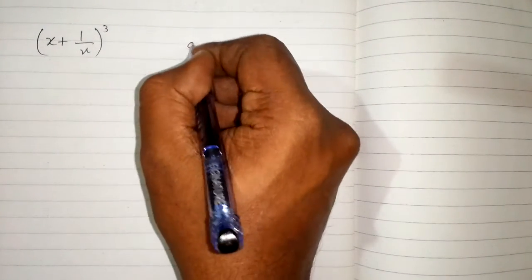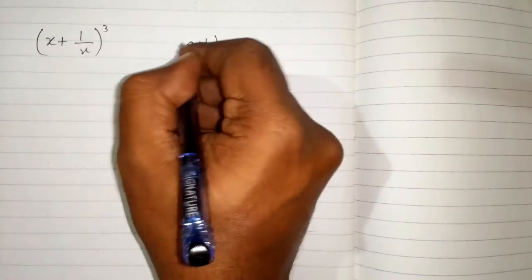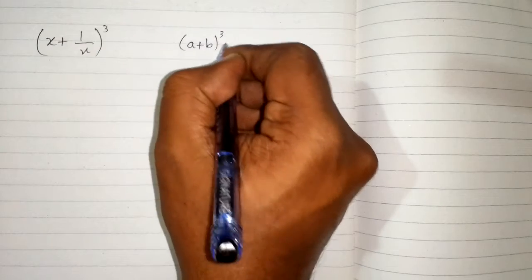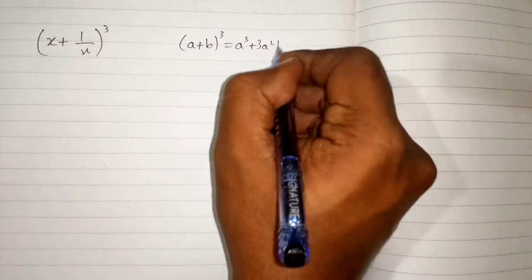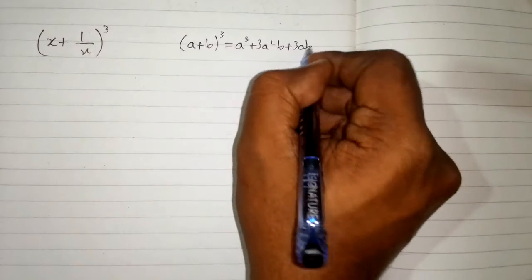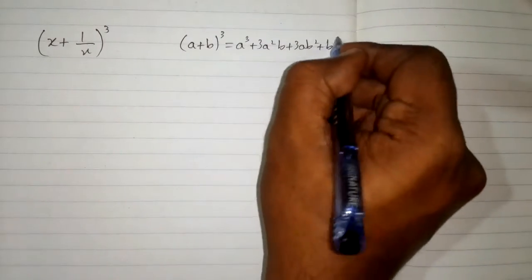In this video we will find the cube of x plus 1 upon x. We can use the algebraic identity (a + b)³ equals a³ plus 3a²b plus 3ab² plus b³.